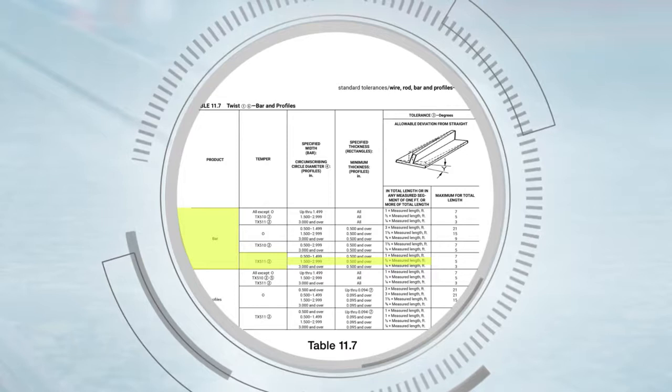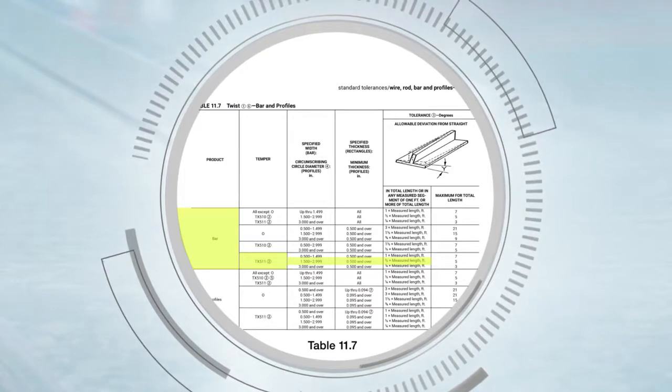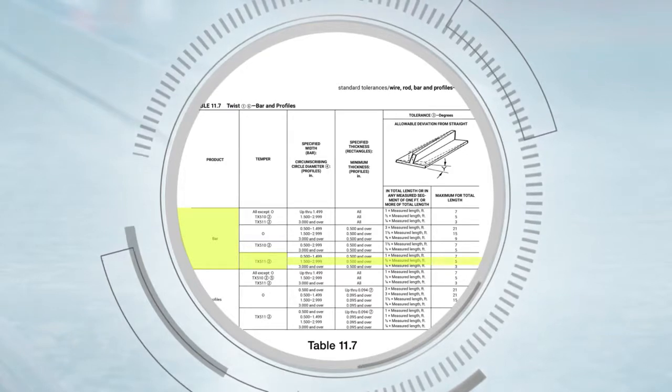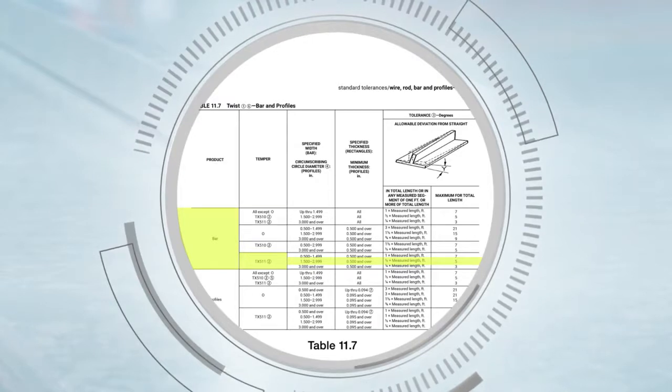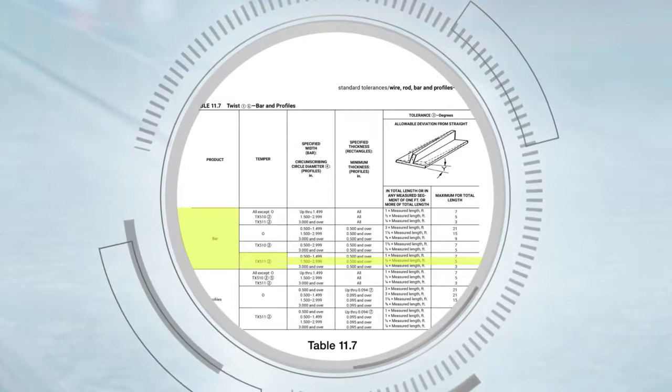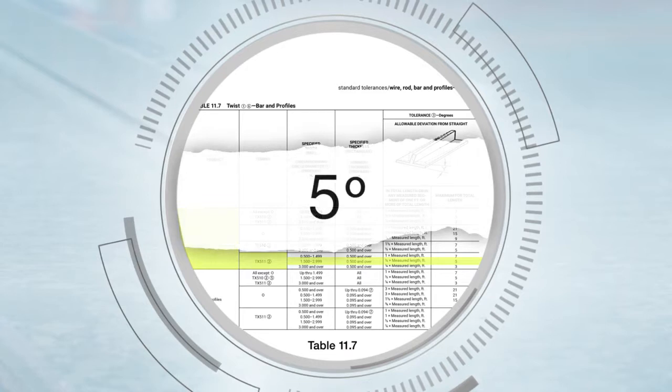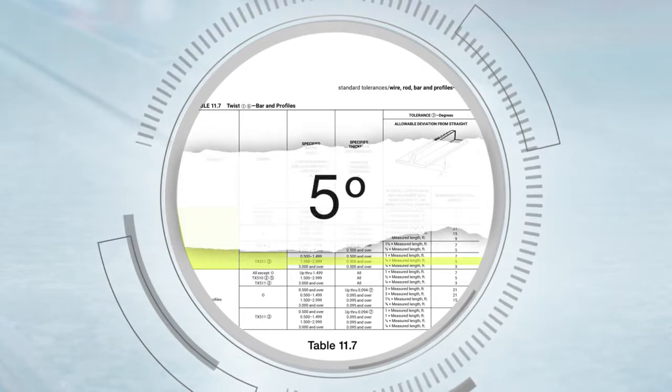Twist tolerances do not increase indefinitely with length. The column at the far right of the table specifies the maximum twist limits for the total length of an extrusion. For this example, the maximum allowable twist would be five degrees.